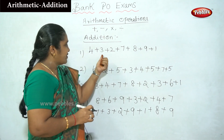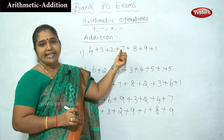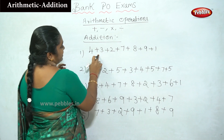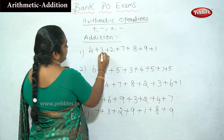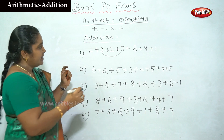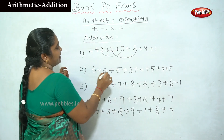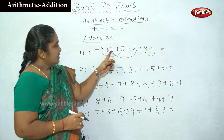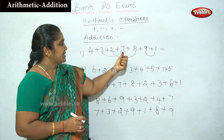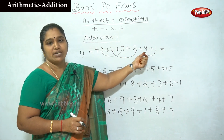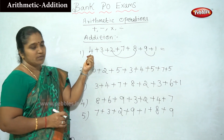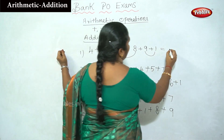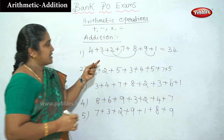Now, instead of adding 4 plus 3 is 7, then 7 plus 2 is 9, and so on, we do not do that. See — 3 plus 7 is 10, 2 plus 8 is 10, and 9 plus 1 is 10. We have 3 tens, and the remainder is 4. So the answer is 34.